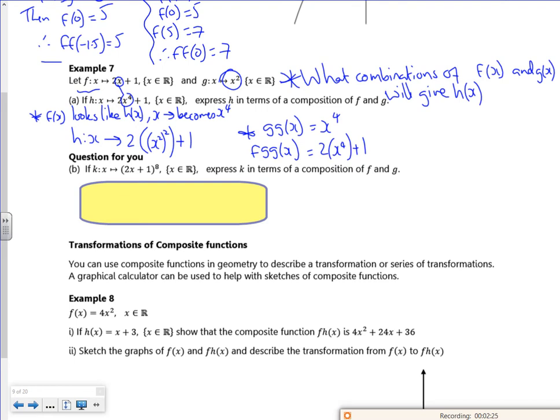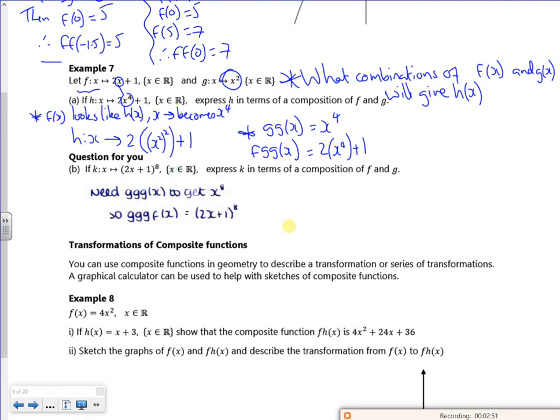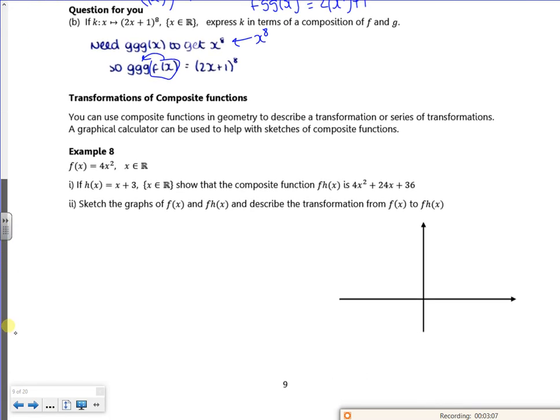So then f g of g will be 2 lots of x to the 4 plus 1. So f of g, g is the one. And there's one for you here now. So you've got to get 2x plus 1 to the power of 8. So you've got to square it, square it, square it. You've got to get an x to the 8 and then stick the f inside it. So the f would have come first. So you can get the x to the 8 from g, g, g, but I need to put the f into it first. So I've got g, g, g, f.